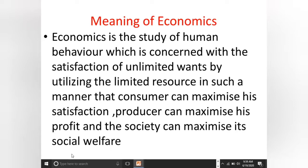Economics में तीन aspects हैं। पहला है consumer — वो व्यक्ति जो goods and services को consume करके अपनी wants को satisfy करते हैं। दूसरा है producer — जो वस्तु को produce करता है ताकि maximum profit gain कर सके। तीसरा है society — जिसका motive social welfare को maximum करना है, और यह काम mostly government करती है।